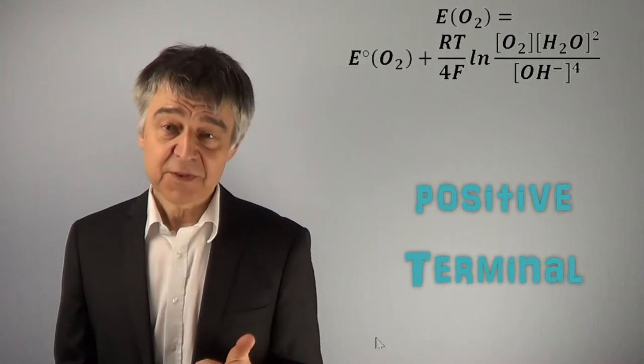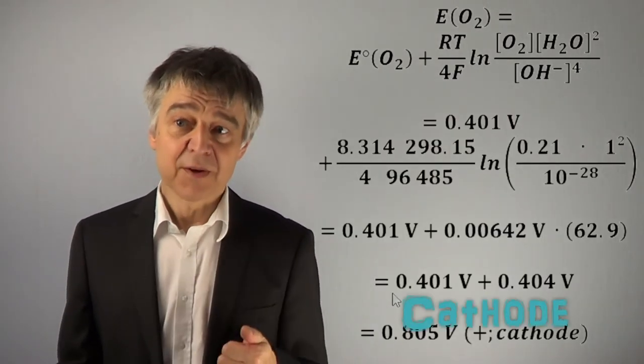This value is more positive than the potential of a silver chloride electrode, i.e., the oxygen electrode is the positive terminal and the cathode.